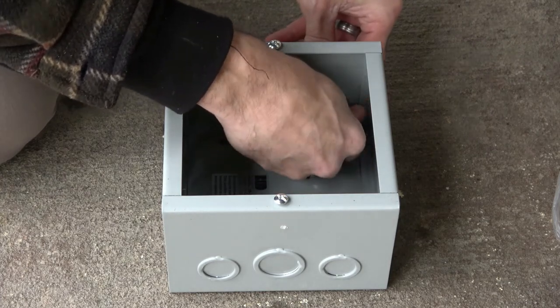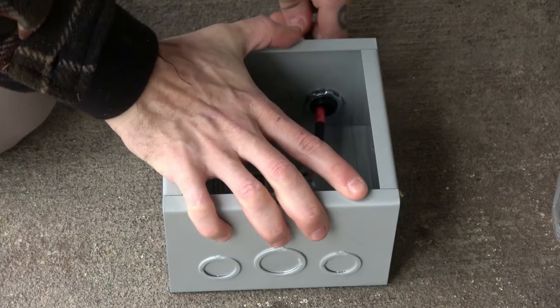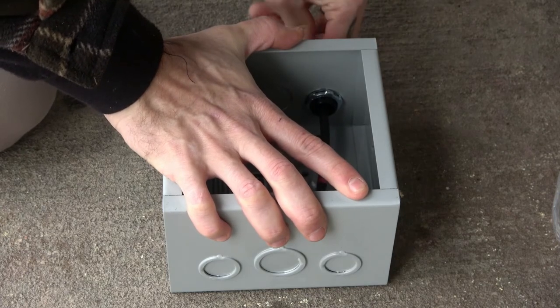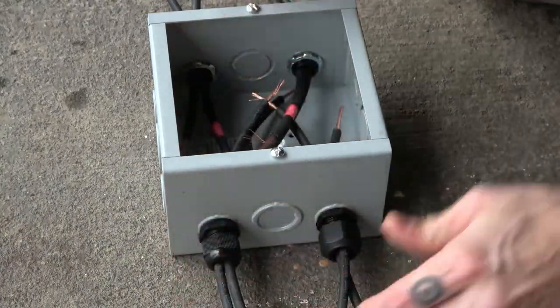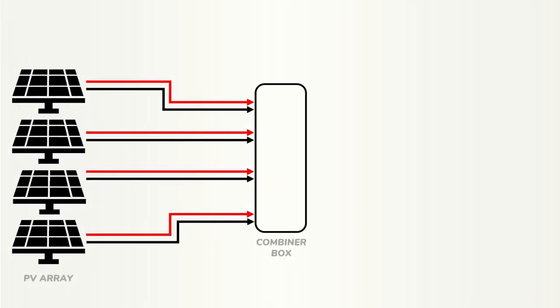So now we'll insert the strain release into their respective knockouts, then tighten the corresponding nuts and then feed each set of PV wire through the holes. This process will be repeated for all four sets of PV wire. So now we have eight wires coming into the junction box with four positives and four negatives.